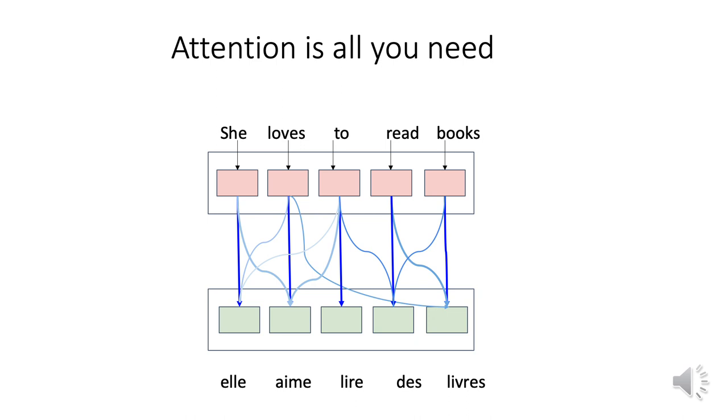For example, here, in order to translate the word she, it focuses on the first part of the vector as compared to the others. This approach made neural machine translation much faster and accurate and is commonly referred to as the transformer architecture.